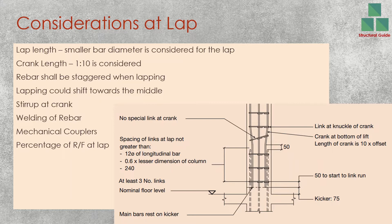Consideration of lap length: when we are doing the laps, we consider the smaller bar diameter. If you have two bars of the same diameter there is no issue, but if you have different bar diameters — for example, a 25mm bar lapping with a 20mm bar — you consider the smaller bar, that is the 20mm bar, for lapping. In general, we maintain the lap length around 50 times the bar diameter, where the bar diameter is the smaller bar diameter. This value of 50 could be referred to in the relevant design standard, which may specify this value.